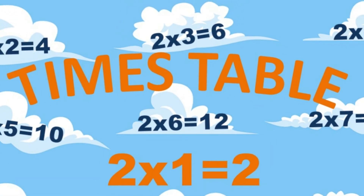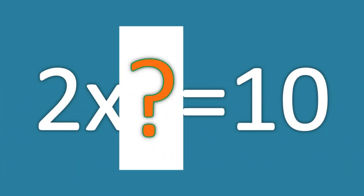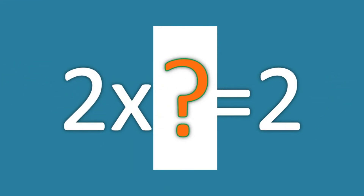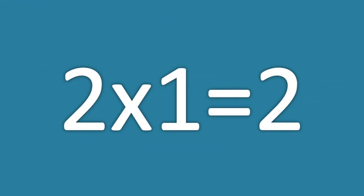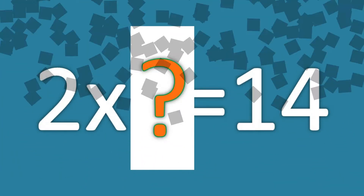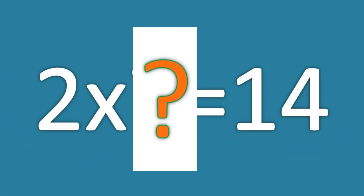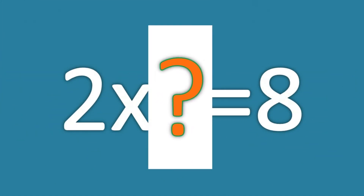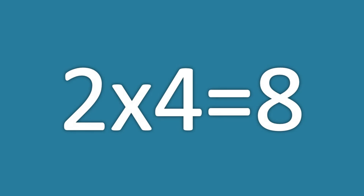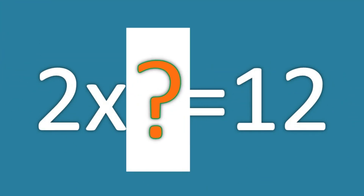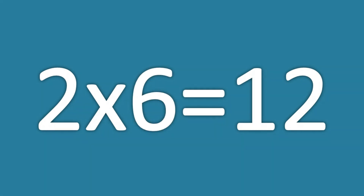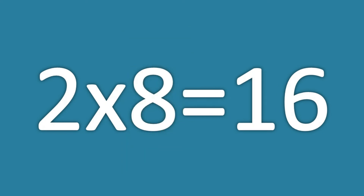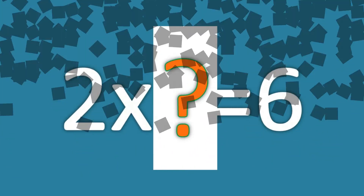And here is the last task for you. What multiplier is hiding from you? Two. Two. Two. Two. Two.